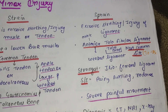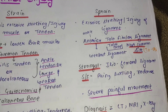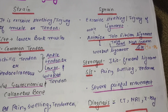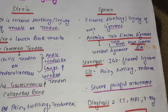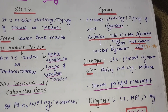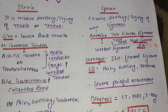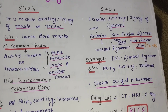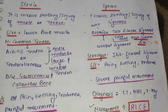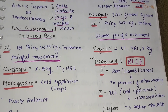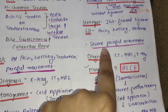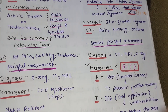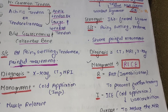Next हम पढ़ते हैं sprain के बारे में. Sprain में excessive stretch होती है, injury होती है ligament की — ligament bone को bone से connect करवाते हैं. Most common site — anterior talofibular ligament — यह weakest ligament होता है, most common sight होती है sprain की. Sign and symptoms में severe painful movement होगा. Diagnose करने के लिए CT scan, MRI, X-ray का use किया जा सकता है.